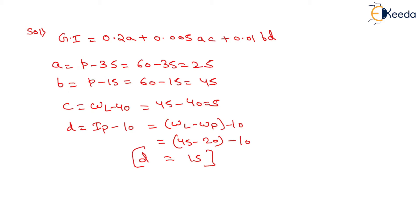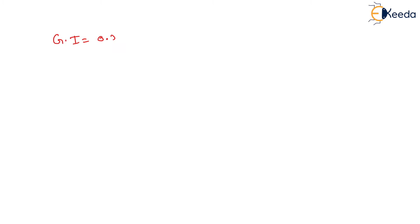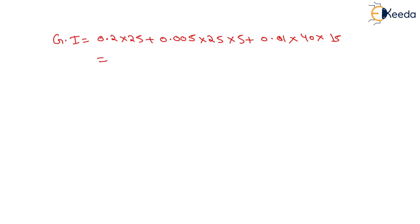Now we have determined the values of A, B, C, and D. We will put these values into the group index formula. Group index equals 0.2 into 25, plus 0.005 into A and C — where A is 25 and C is 5 — plus 0.01 into B and D — where B equals 40 and D equals 15. On solving this, the group index value equals 11.625.